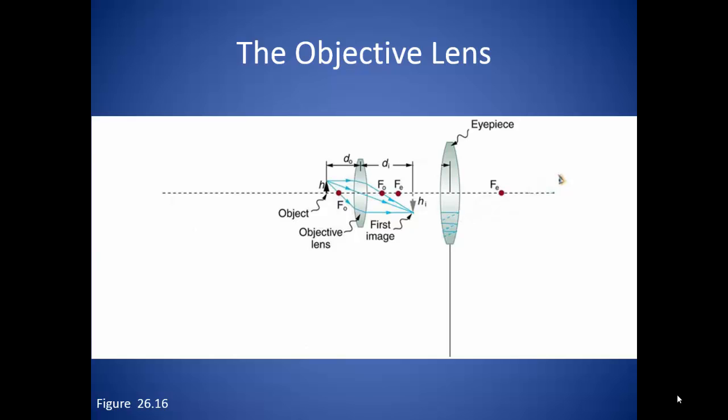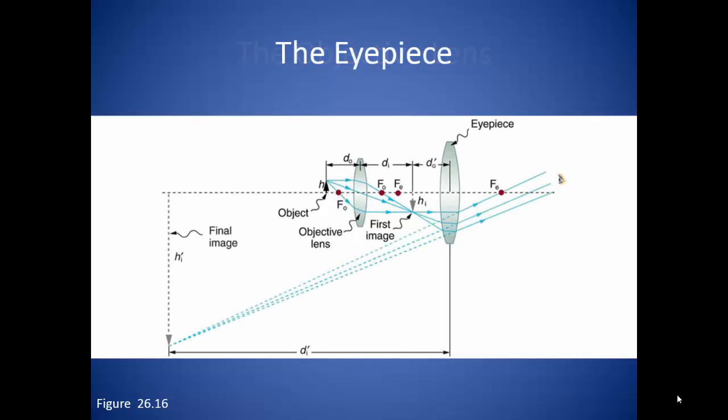This first image becomes the object for the eyepiece. The eyepiece is the adjustable part of the microscope. The viewer can move the eyepiece so that the focal point of the eyepiece is at the point just beyond where the image was formed by the objective lens.